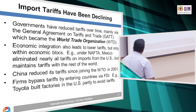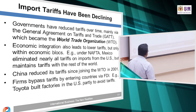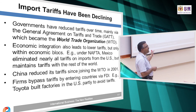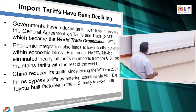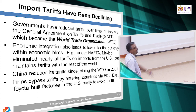For example, under NAFTA, Mexico eliminated nearly all tariffs on imports from the US but maintained tariffs with the rest of the world. We will learn about trading blocs later. China reduced its tariffs since joining WTO in 2001. When countries commit to reduce tariff progressively, when China became a member of WTO, they also started to reduce the tariff.